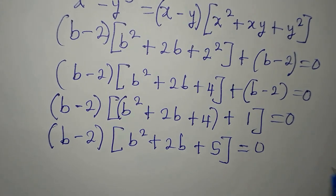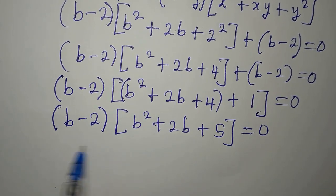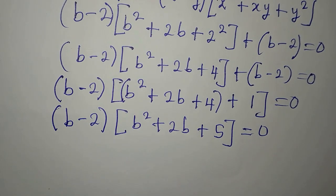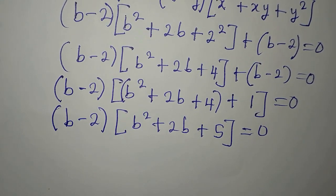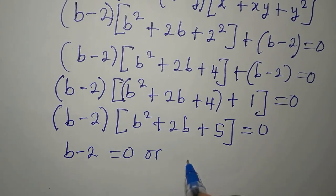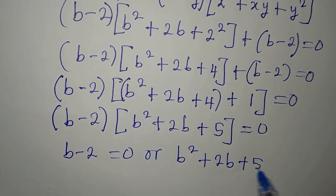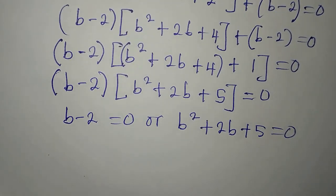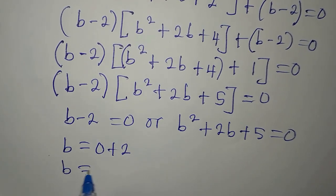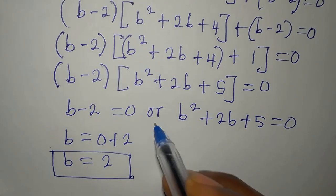We have two factors whose product is zero, so either or both must equal zero. Setting B minus 2 equal to zero gives B equals 2. This is our first and only real solution. We still need to solve B squared plus 2B plus 5 equals zero for the remaining solutions.